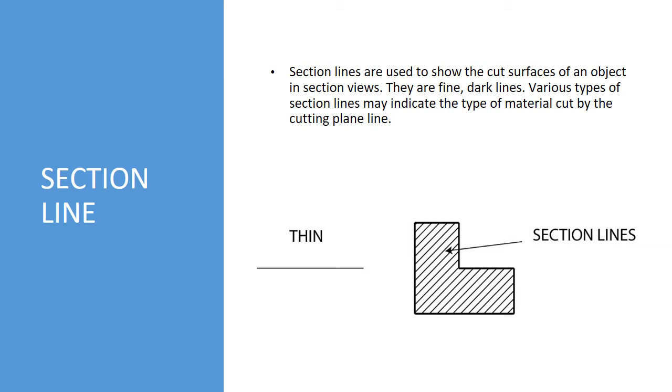Various types of section lines may indicate different material cut by the cutting plane line. Sometimes if you're building things out of brick, wood, steel, concrete, whatever, they've got different section lines. But for the most part, we're not going to mess with it. These little diagonal lines are called section lines.